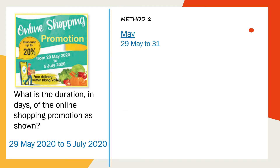Now look at method two. To find the duration you need to subtract: 31 days minus 29 days. When you find the duration by subtracting the days, you need to add one day as the first day is considered as one day. So 31 minus 29 plus one day gives you three days.